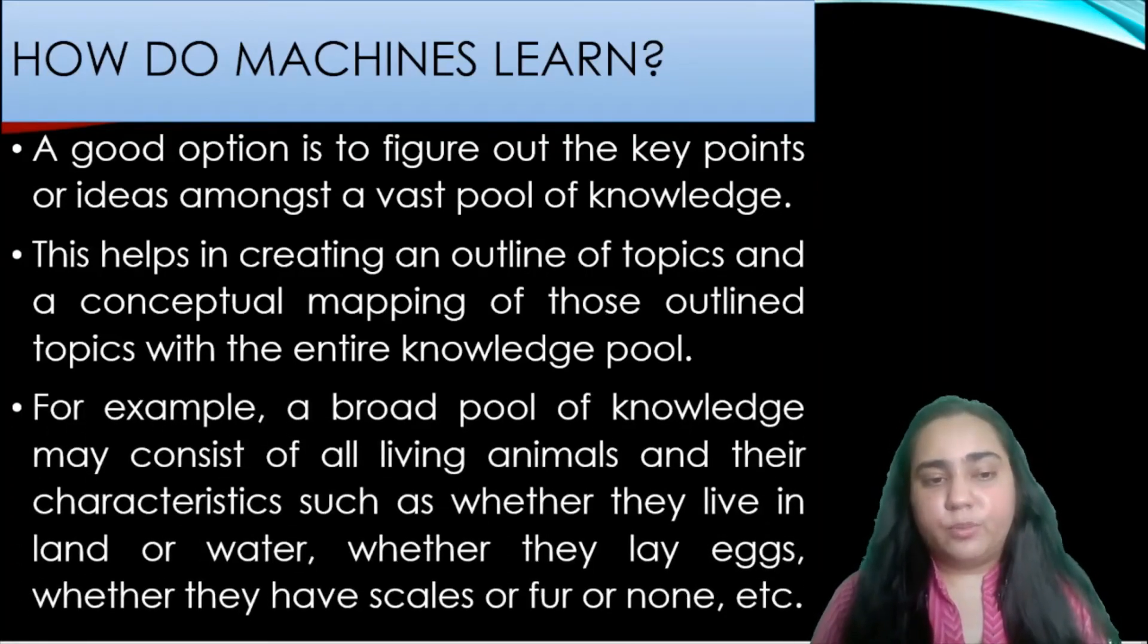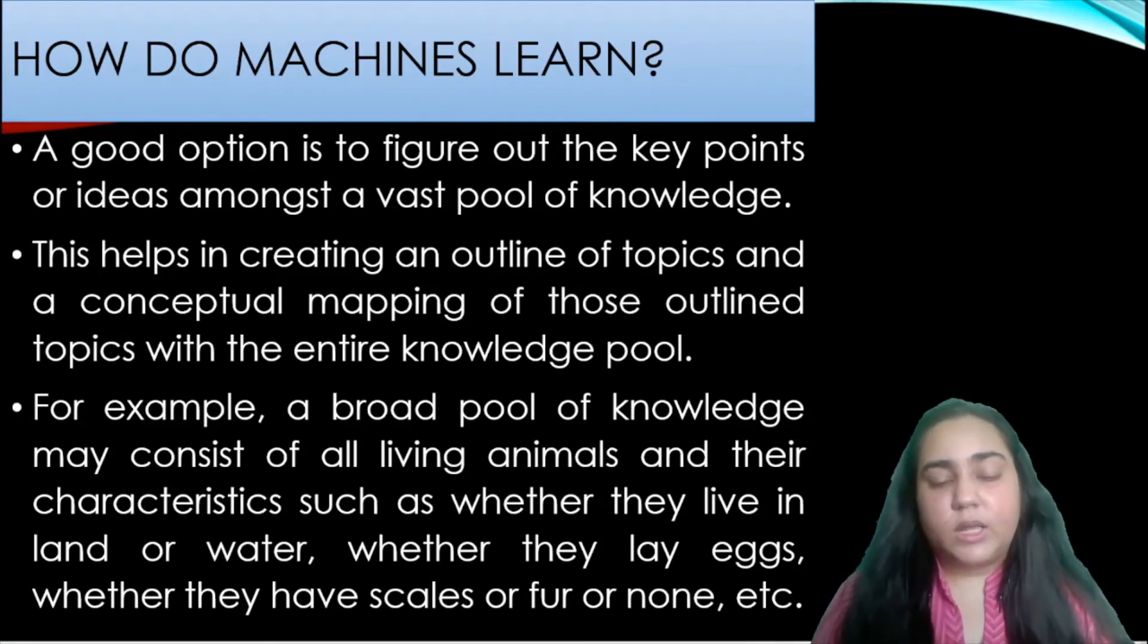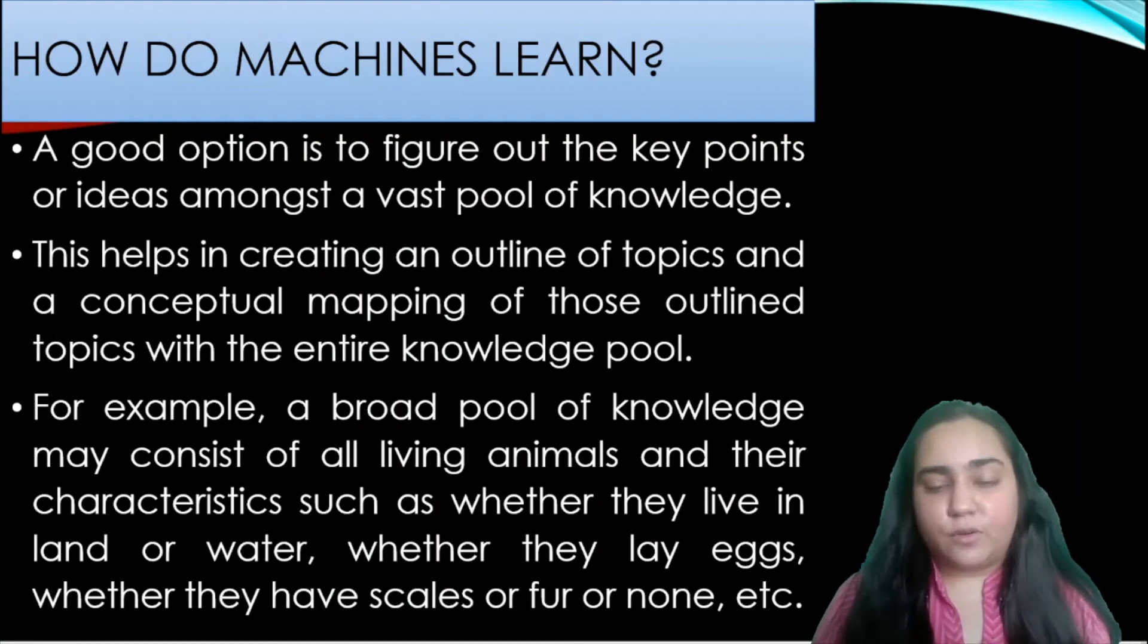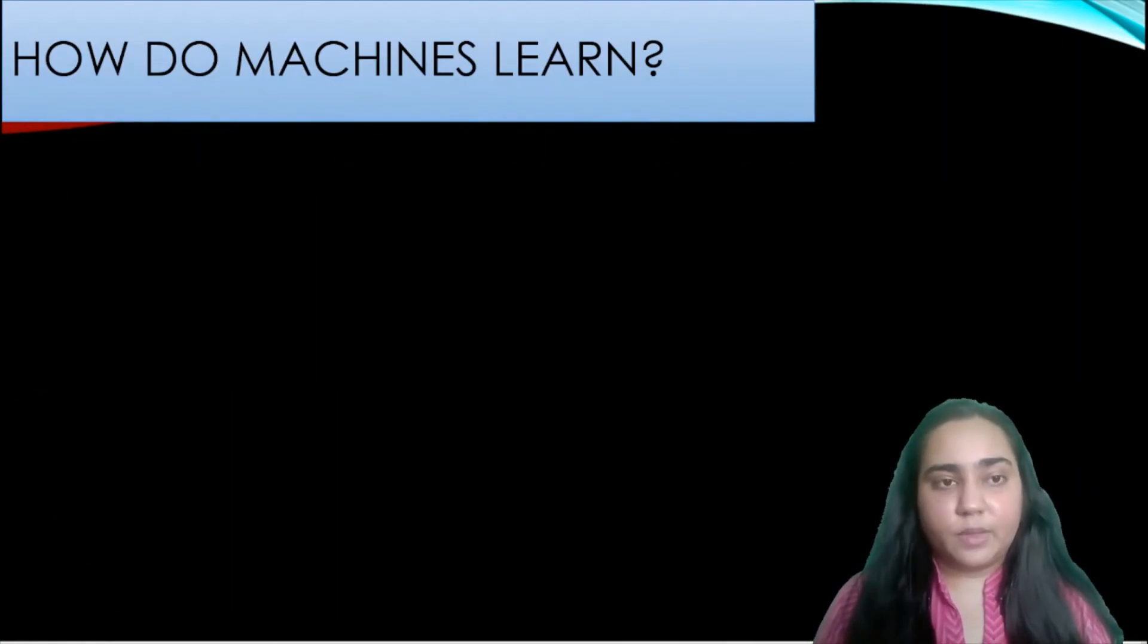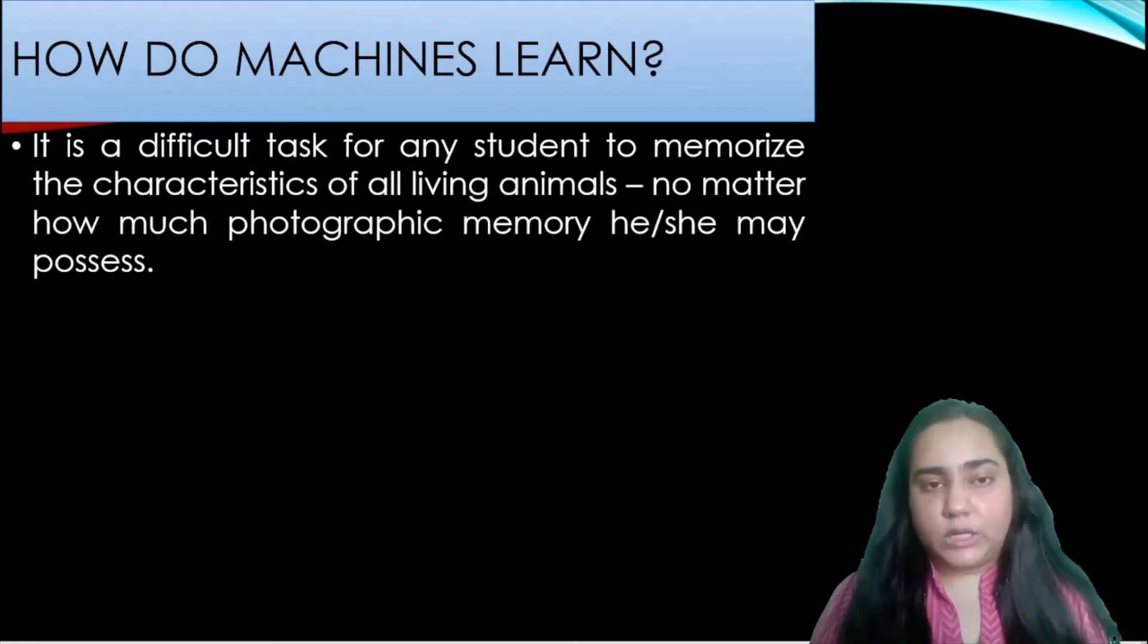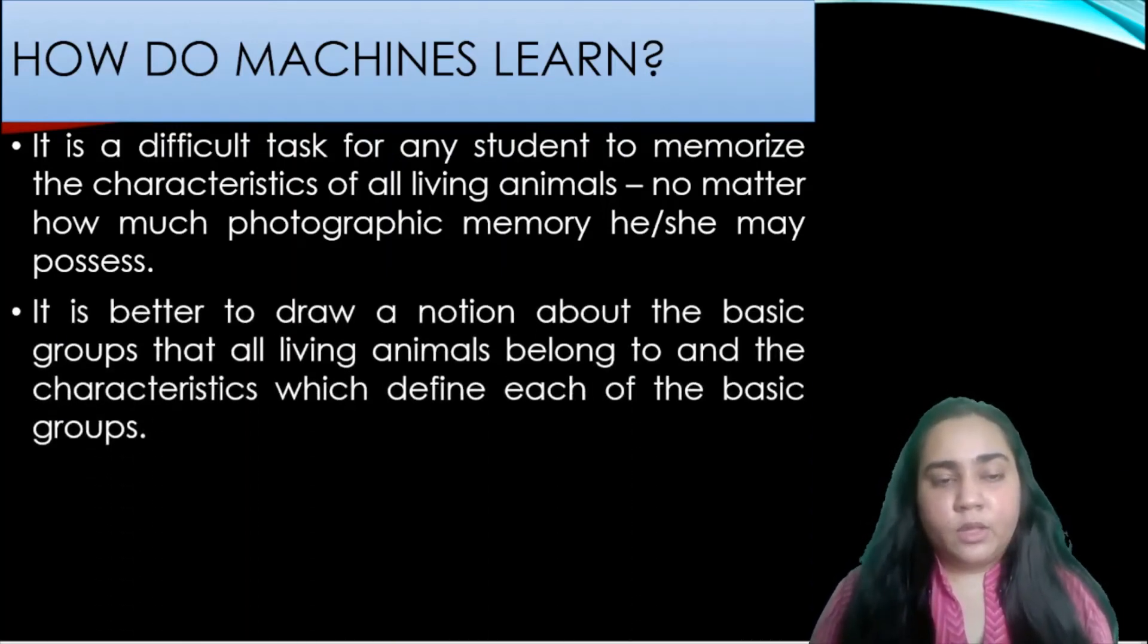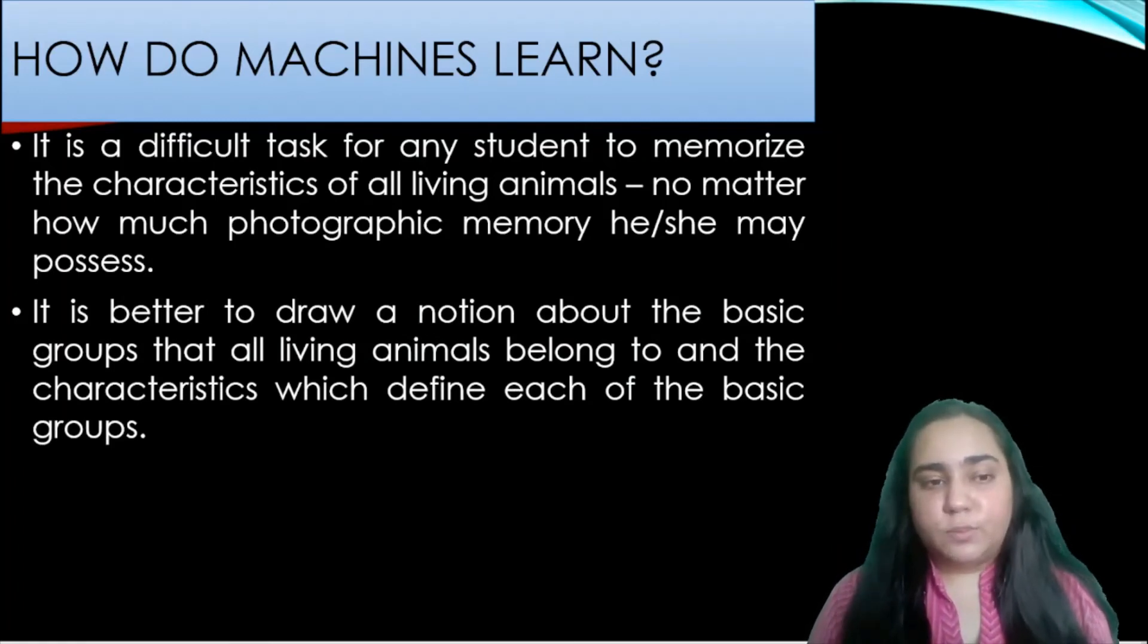For example a broad pool of knowledge may consist of all living animals and their characteristics. There are many animals and they have all different characteristics. They could be living in water or on land, they could be laying eggs, they could have scales or fur or none. It is a difficult task for any student to memorize the characteristics of all living animals. No matter how much photographic memory he or she may possess it's not possible for you to learn about each and every animal.